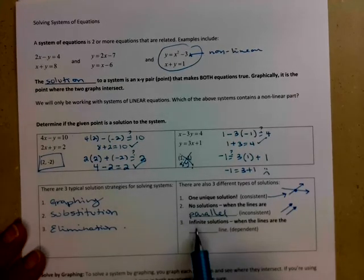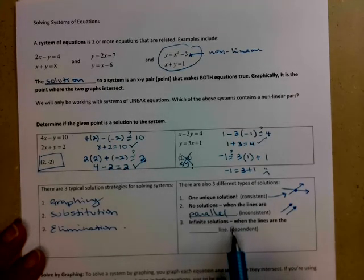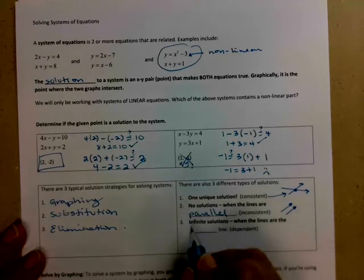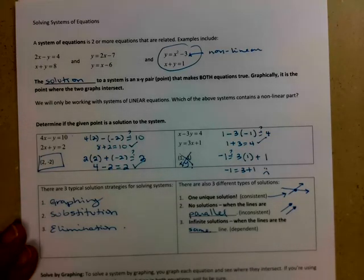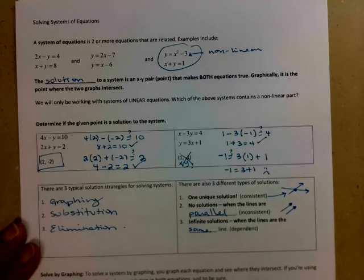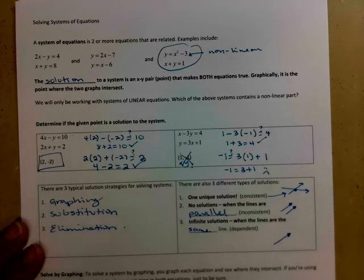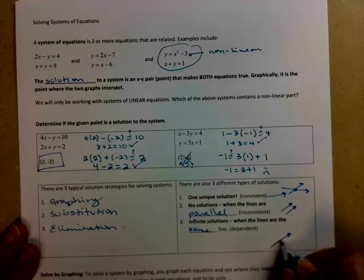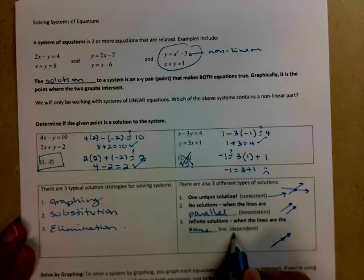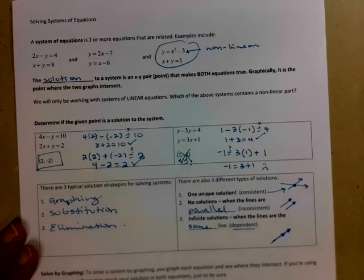And then lastly, we could have infinite solutions. So this is where the lines are the same line, just different versions of it. It might be scaled or something. So you'd graph your one line, and then you go to graph your second line, and it turns out it's right on top of its exact same line. And we call that a dependent system.